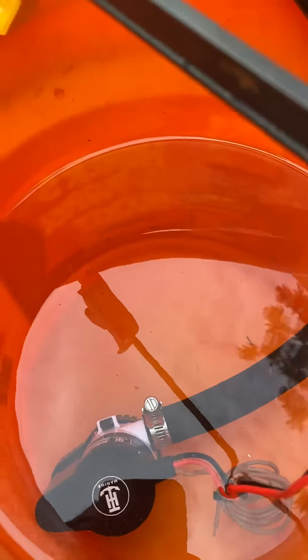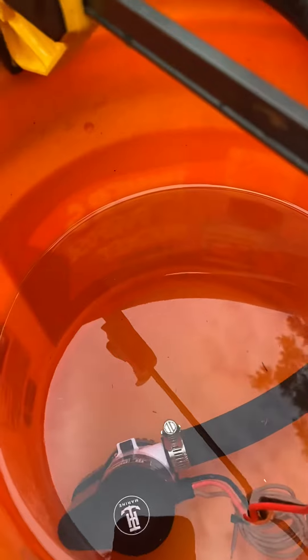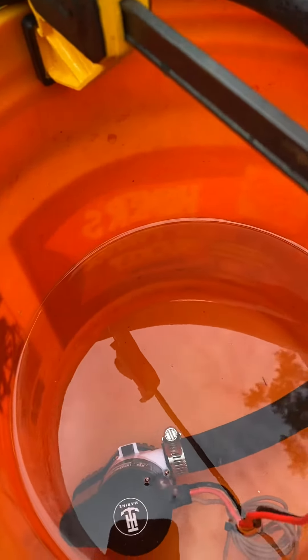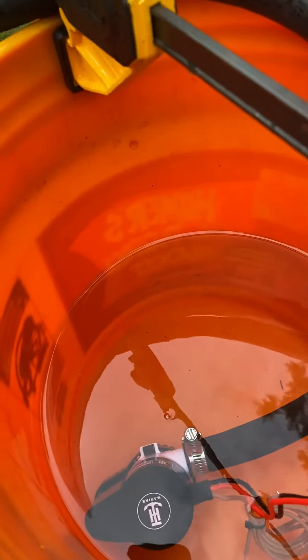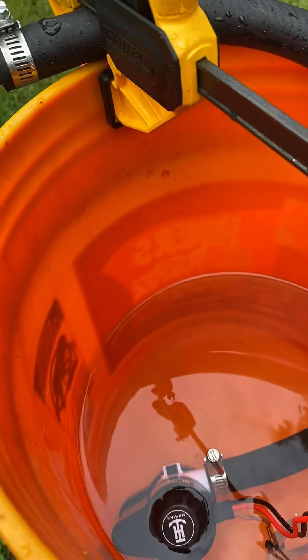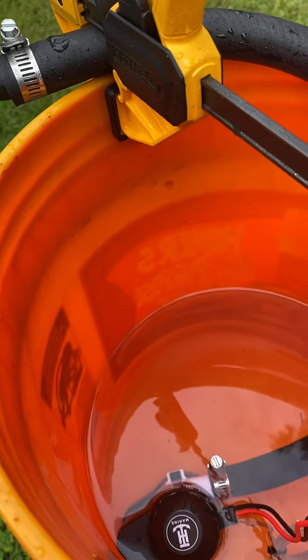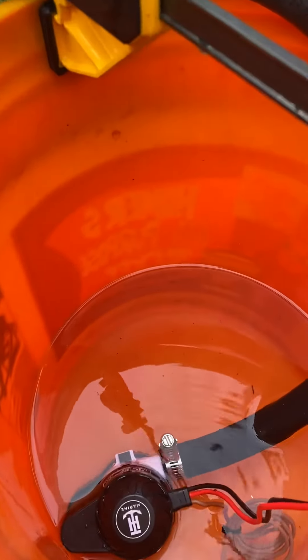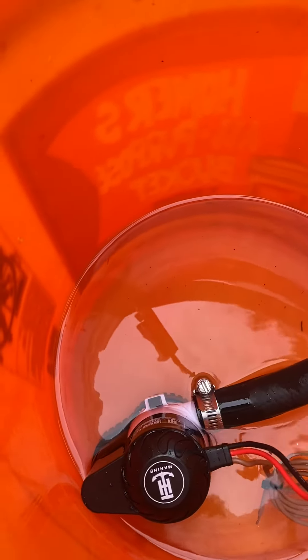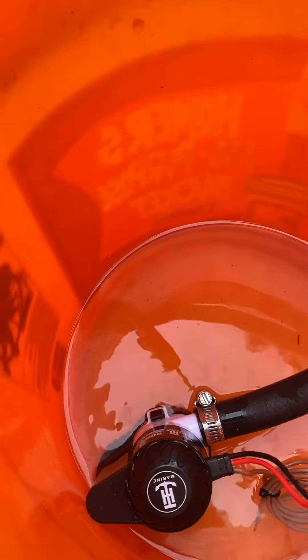And when that float gets to a certain point, the pump's going to cut off. The Rule pump has an electronic sensor. It takes a few seconds before it comes on after it sees the water and a few seconds for it to turn off after the water is gone. So the Rule pump is probably going to drain it to the bottom. We'll get as close as we can.